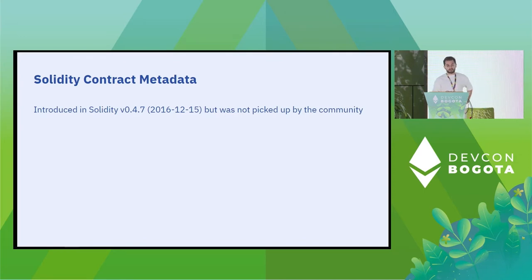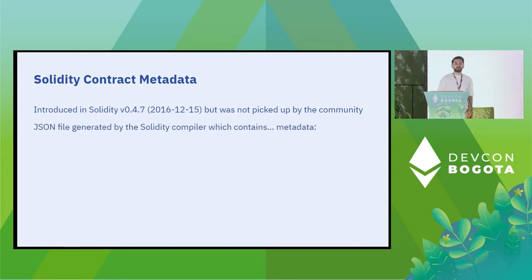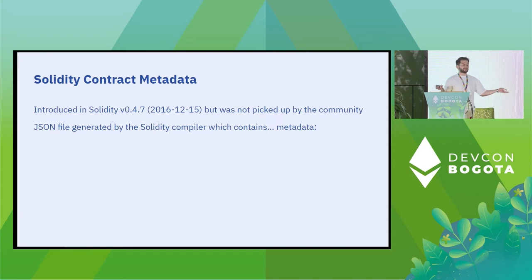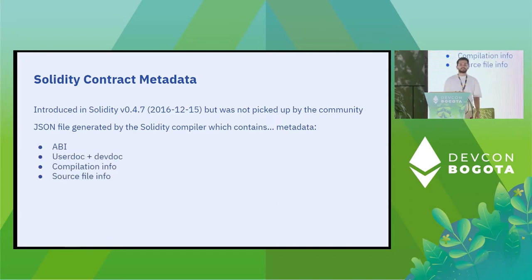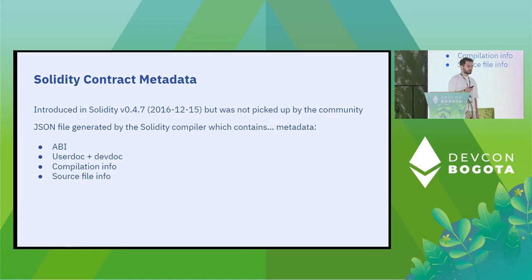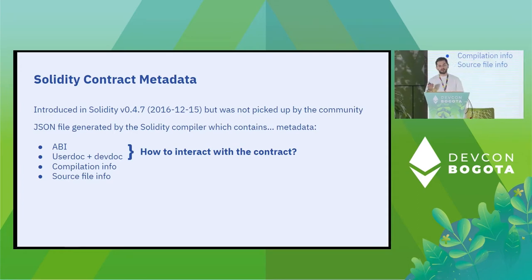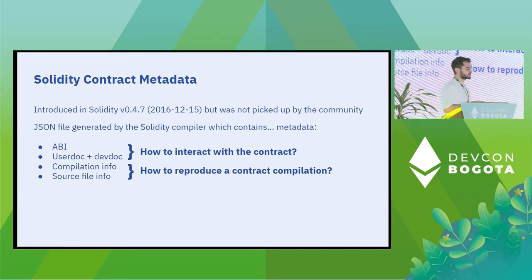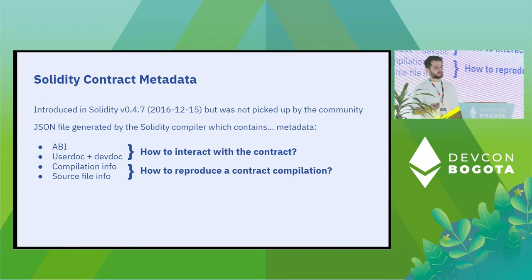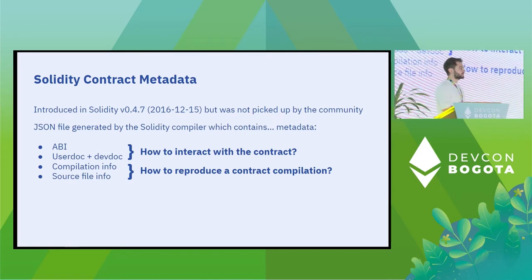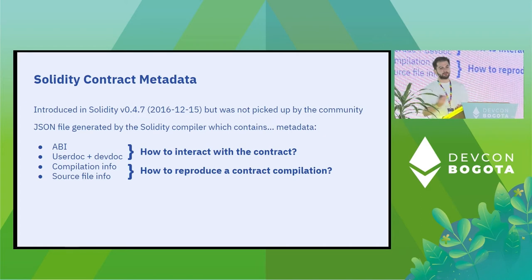The metadata contains the ABI, the user doc, dev doc, as well as compilation info and source file info. The first two fields concern how to interact with the contract — how to interface with it. The second two are about how to reproduce a contract compilation, embedding the information so that it can be reproduced.